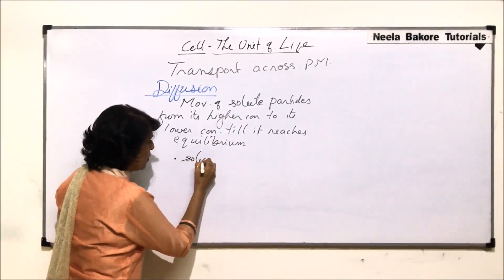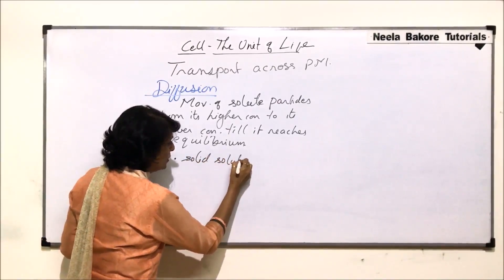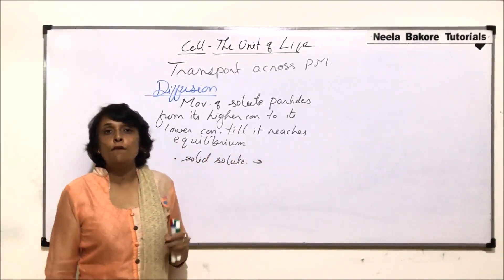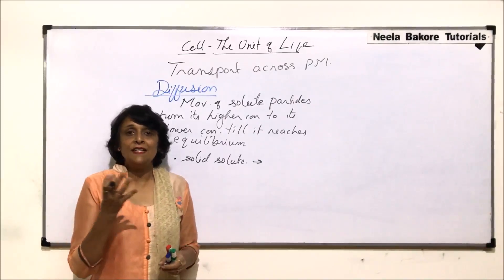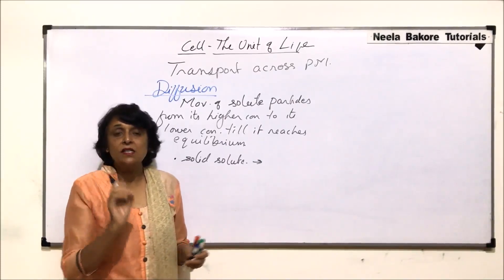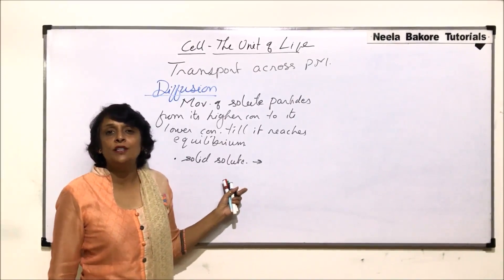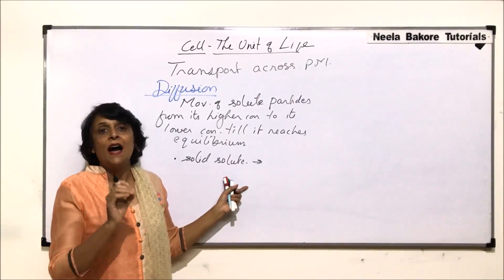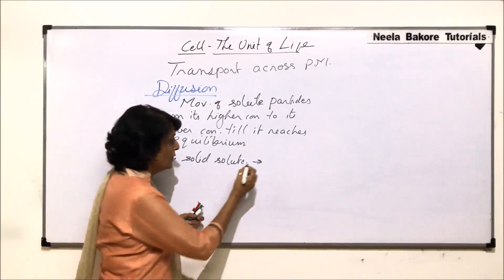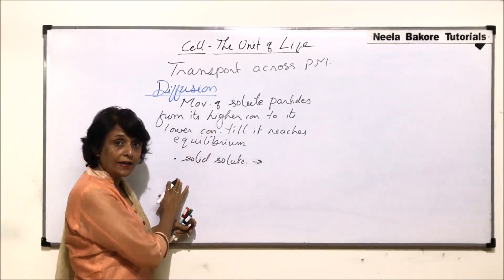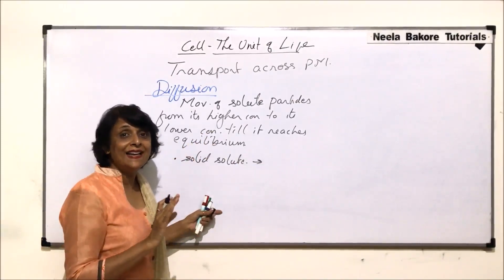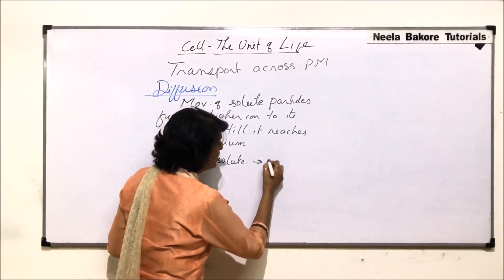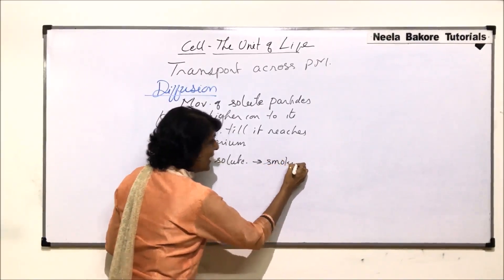Let us take examples of different types of solute particles. For a solid solute particle, we can take the example of smoke. Whenever we see smoke, there are black particles — incompletely burnt or unburnt carbon — so the solute is solid and it is moving in a gas, that is, in air.